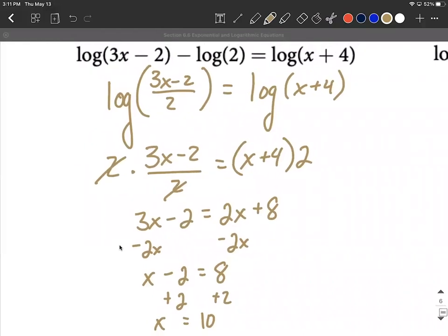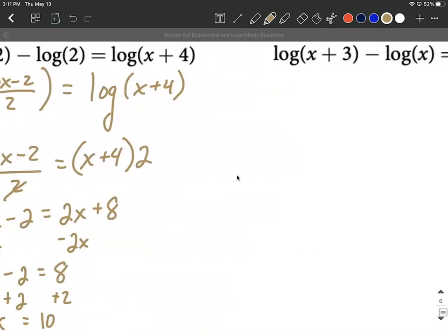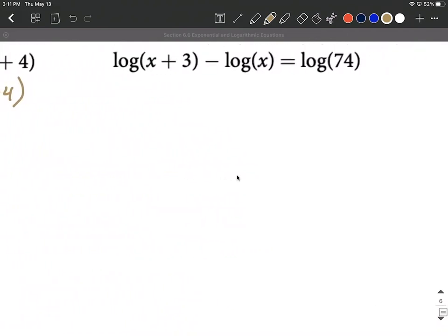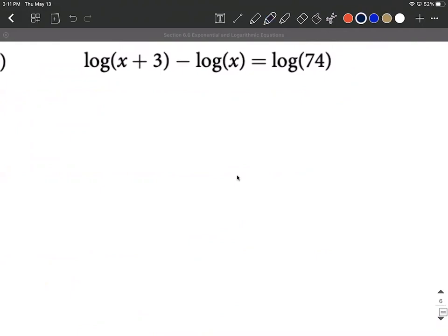So as you're doing this, make sure you combine your logs together, get a single logarithm first, and then work on dropping the logarithms based on the one-to-one property and solve down whatever results. All right, one more, just slightly more difficult but very similar as far as our steps go. First thing I noticed, we have three logarithms. We only want to have a single one on the left side, a single one on the right side, so let's combine these logs together.